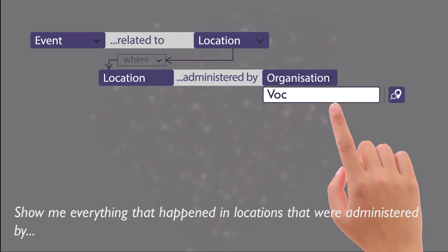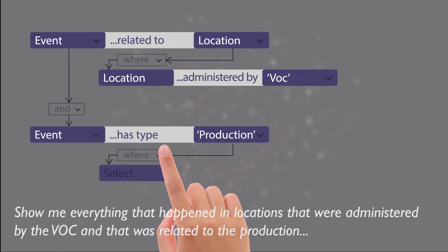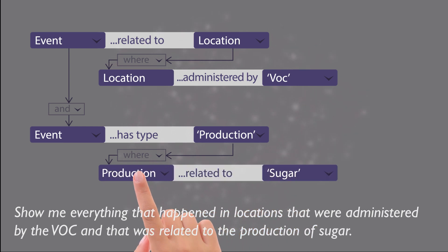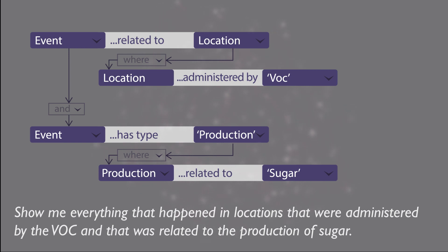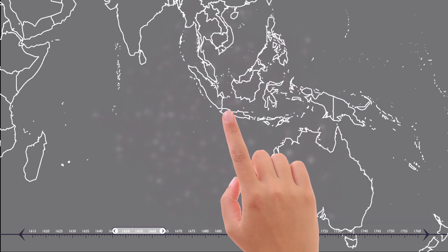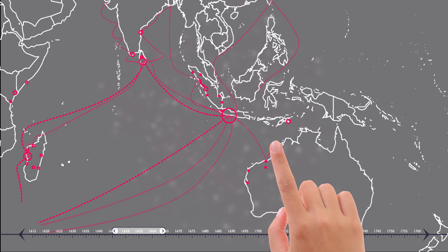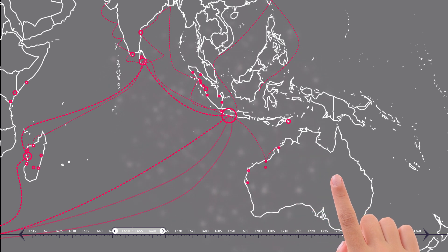The interface helps the researcher navigate the available data. This search yields results that are directly relevant to the research question. They can be explored, among other ways, in a map view, allowing users to quickly see how their results are geographically distributed.